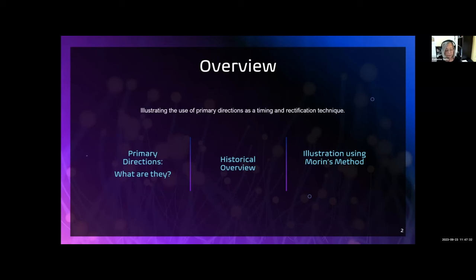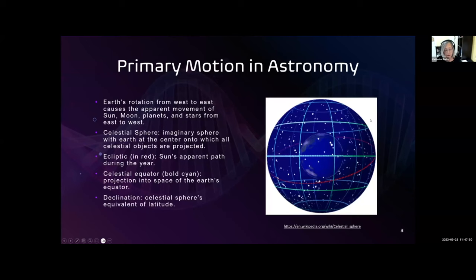In this talk, we'll look at the structured way one Renaissance astrologer, Jean-Baptiste Moran, used primary directions for rectification and forecasting. Primary motion refers to the rotation of the Earth from west to east.